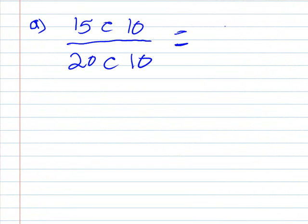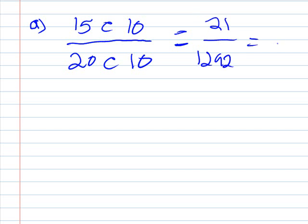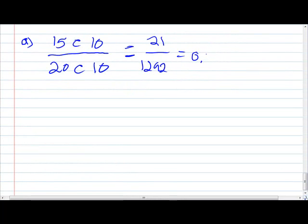And that would equal—do you want fraction? Either or both. Well, in the end, that would equal 21 over 10,292, which would equal 0.2016.